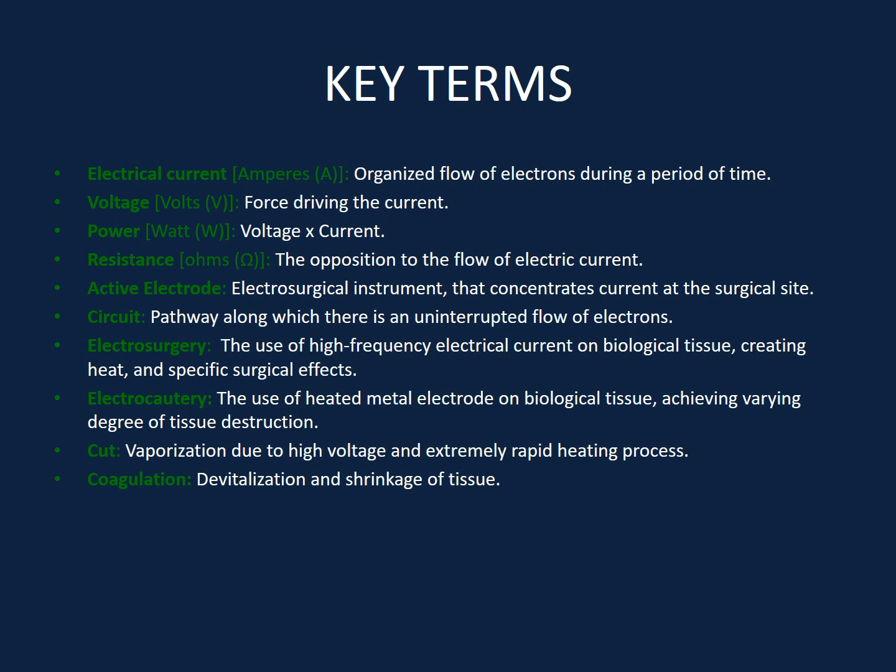Electrocautery differs from electrosurgery in that an electrical current heats a metallic probe that is then applied to tissue. In cutting, the tissue is rapidly heated above 100 degrees Celsius using high voltage, causing vaporization and cellular rupture. In coagulation, the tissue is heated more gently, between 60 to 100 degrees Celsius, causing devitalization and shrinkage of tissue.